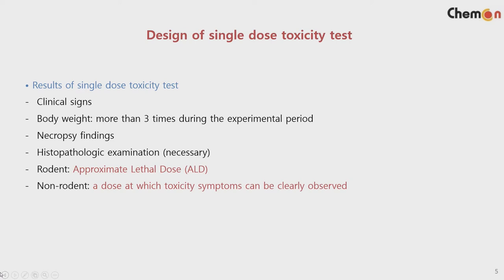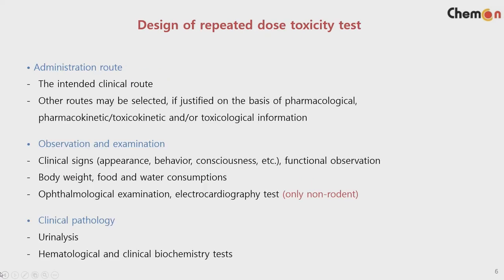For the non-rodent, ALD cannot be calculated. Here, the welfare of the animal is more highlighted for the non-rodent. So if you review or write the report, you need to identify a dose at which toxicity symptoms can be clearly observed — what kind of toxicity symptoms are observed at different dose levels should be stated in the report.